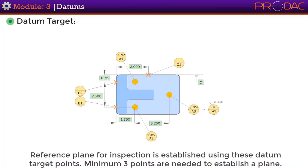Reference planes for inspection are established using these datum target points. Minimum three points are needed to establish a plane.